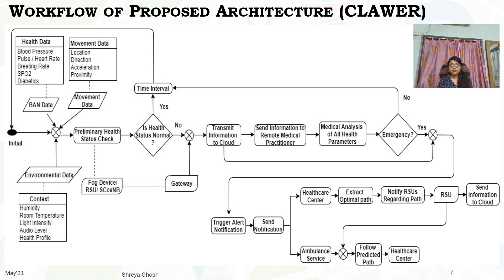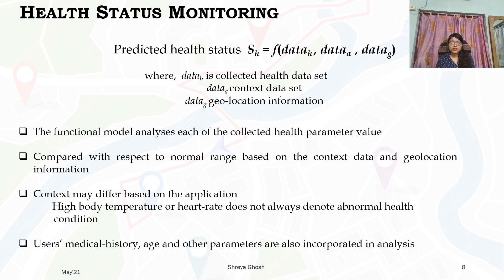In case of health data analysis, a functional model is generated to verify whether the user's health status is normal or not. In this functional model, the geolocation information, contextual information such as humidity, light intensity, or temperature of the environment, and health data are provided as input. Based on the health and context information, if any abnormality is detected, the user is notified through an alarm. Each collected health parameter value is compared with respect to its normal range based on the context data and geolocation information. If the health parameter value falls outside the normal range, the predicted output is that the health status is abnormal. In that case, an alert message is sent to the user along with the information of the nearby healthcare centers.